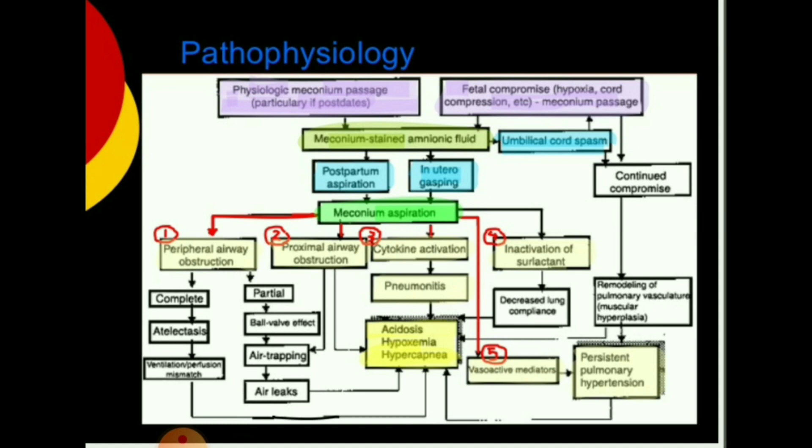When the infant aspirates meconium, it causes: peripheral airway obstruction, proximal airway obstruction, cytokine activation, inactivation of surfactant, and release of vasoactive mediators. Peripheral airway obstruction can be complete — causing atelectasis and ventilation-perfusion mismatch — or partial, leading to the ball valve effect.